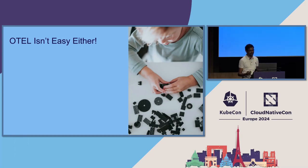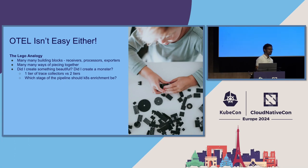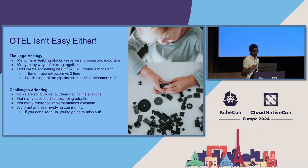OpenTelemetry is not that easy either, especially with the collector. There is a very famous Lego analogy: there are many building blocks — receivers, processors, exporters — and you can put them together in any order. It doesn't really limit you, so you can either create something really beautiful or a monstrosity. You have the ability to have one tier, two tier, or N tier of collectors. Where should the Kubernetes enrichment happen? There are so many things left to the implementer. And there are challenges with adoption — tracing is relatively new, there aren't many reference implementations yet, unlike metrics. The community is also extremely vibrant, meaning what is knowledge today can be completely obsolete tomorrow.